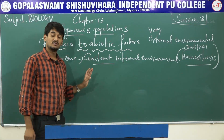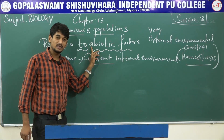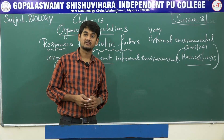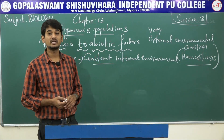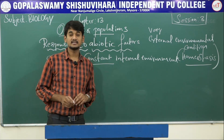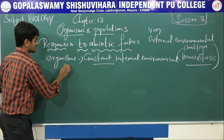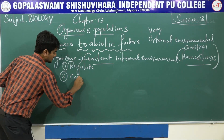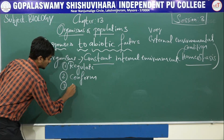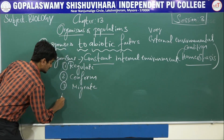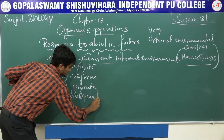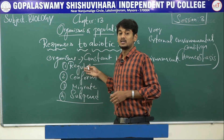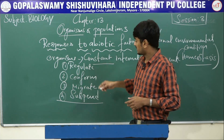There are four ways through which living organisms respond to abiotic factors. Number one: regulate. Number two: conform. Number three: migrate. Number four: suspend. These are the four responses of living organisms to abiotic factors. Now we will discuss them one by one.